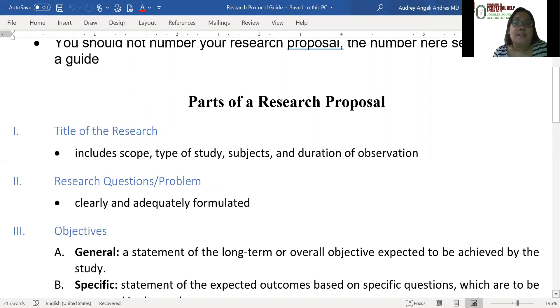So that the title of the research makes clear what you want to do as a researcher. Number two would be the research questions and the problem. Your research question should be clearly stated and adequately formulated.